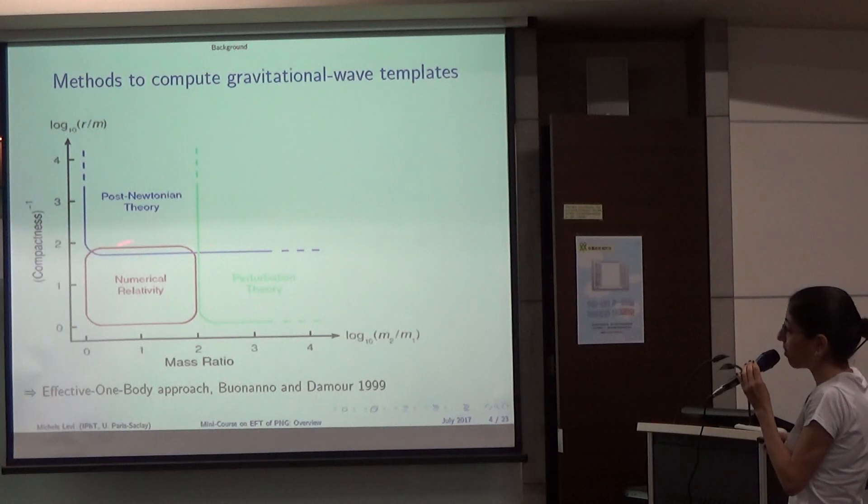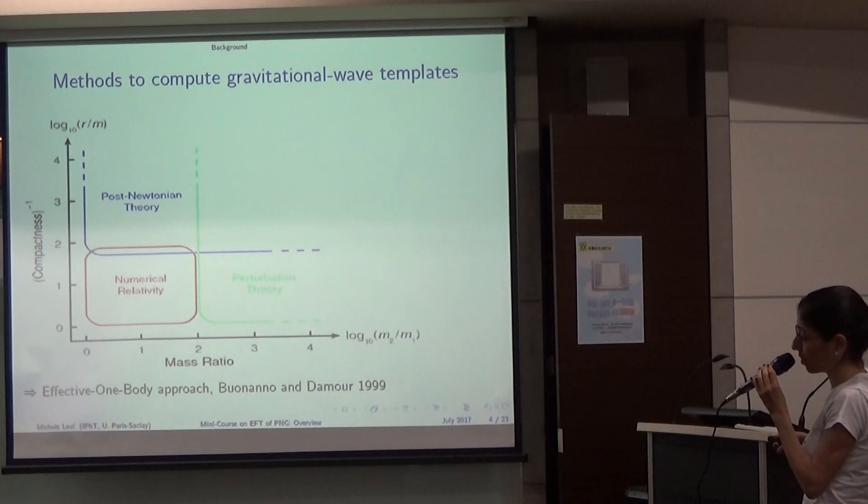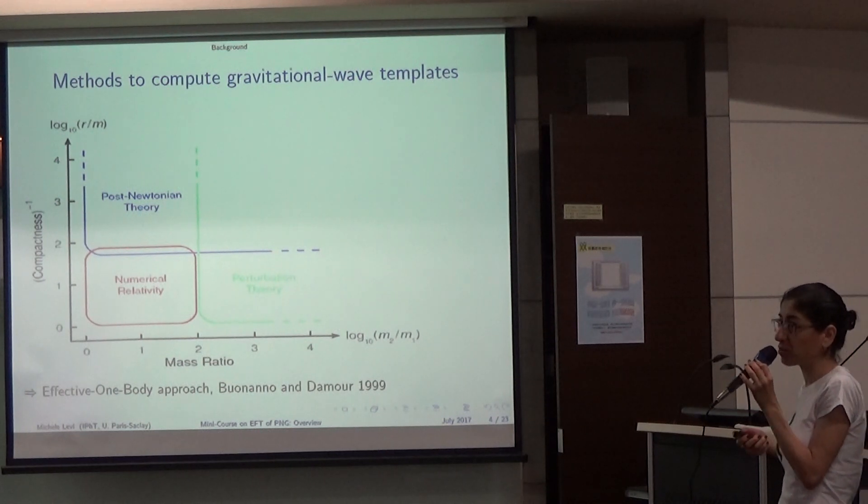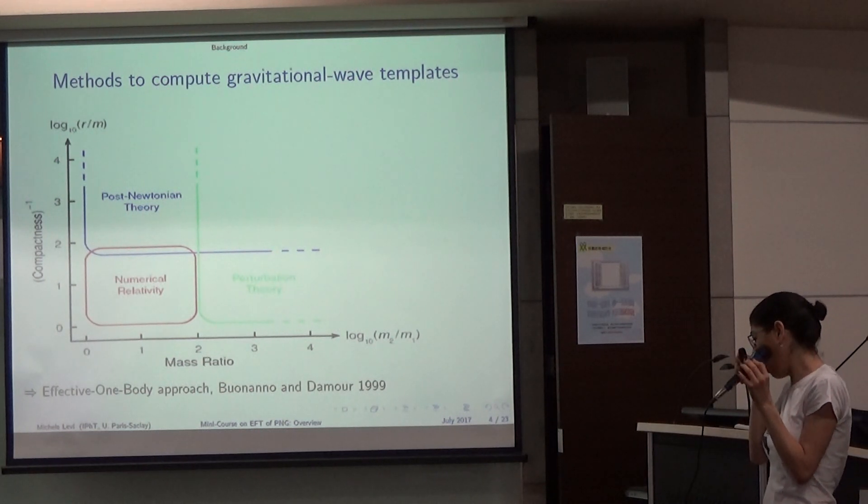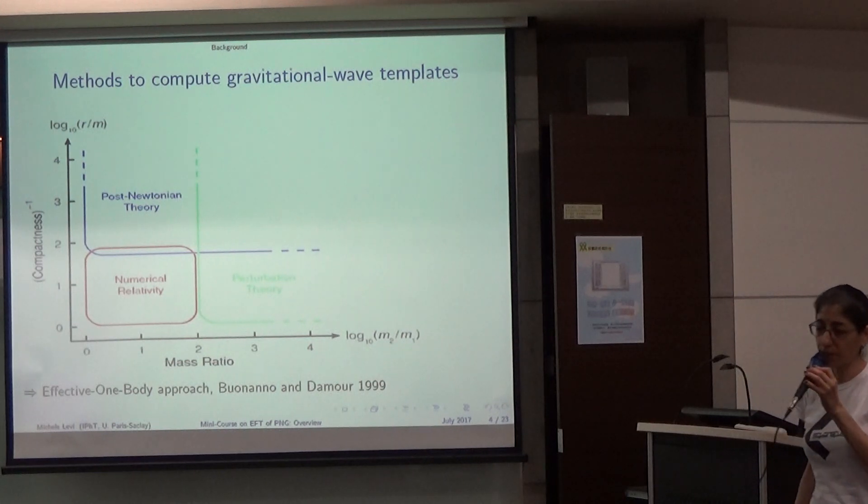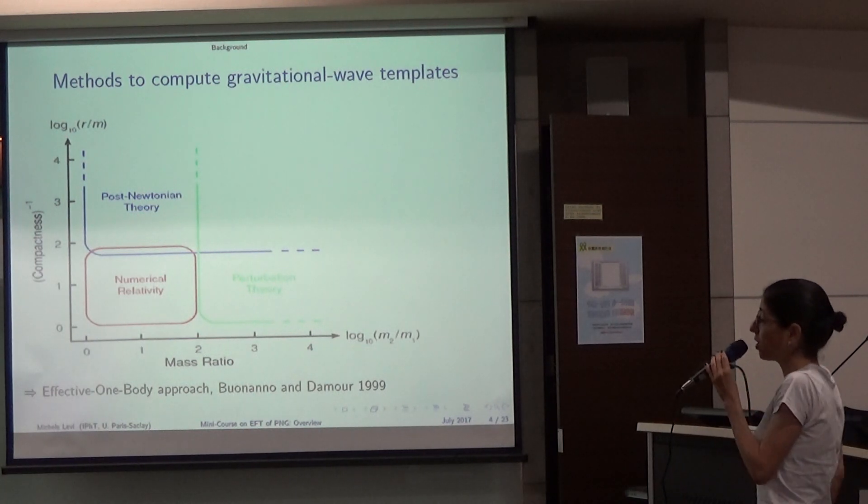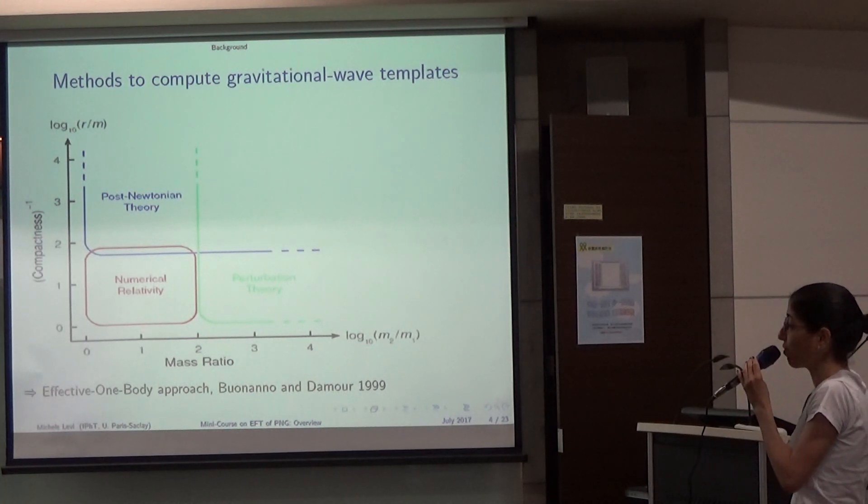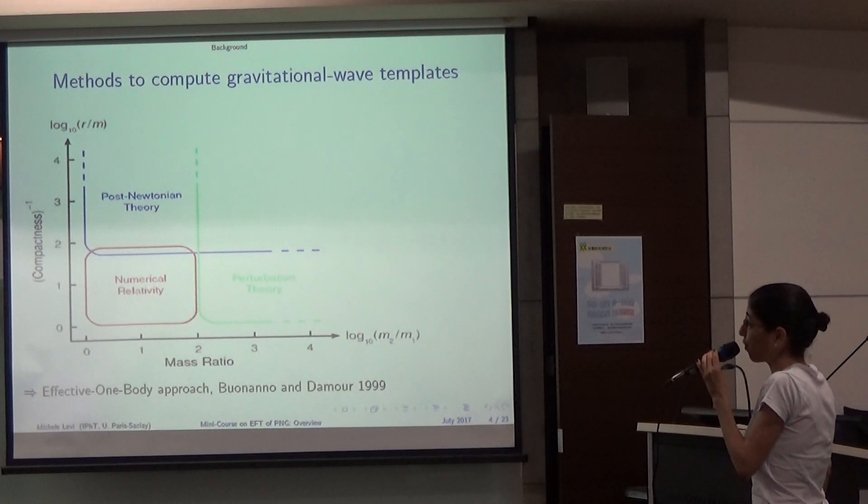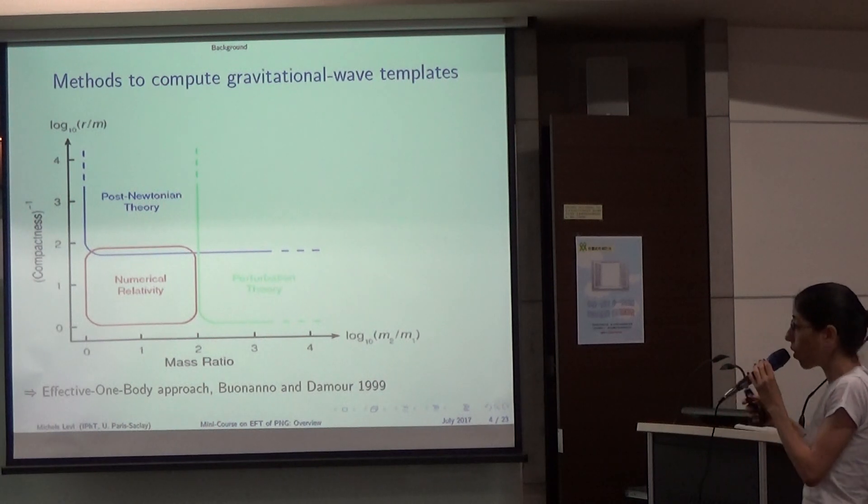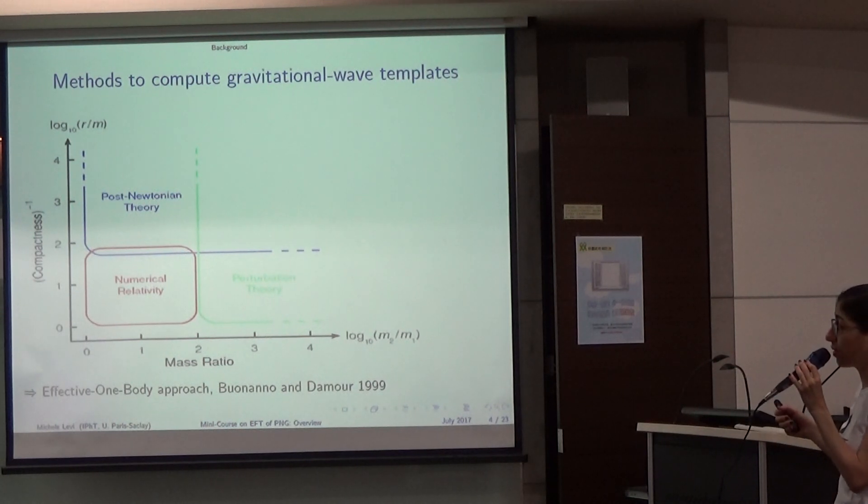But numerical relativity is not able to cover the inspiral phase, where the characteristic time scale of the system is too large to be covered by numerical simulations. It could take ages to run a simulation that could cover the evolution including the inspiral phase. Therefore, to cover the inspiral stage, there is only theoretical post-Newtonian gravity that can work.